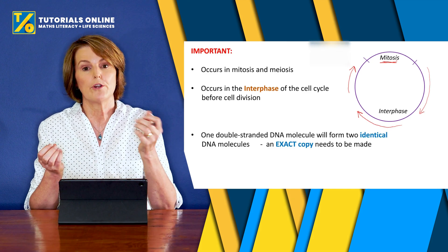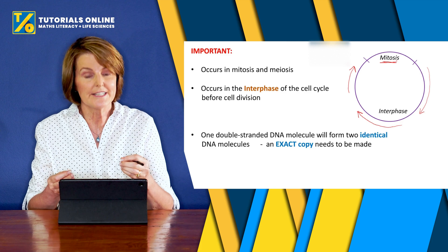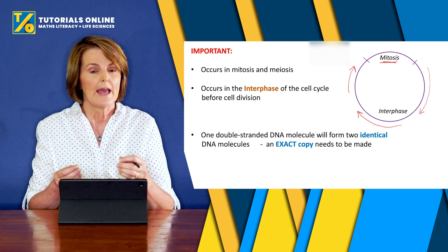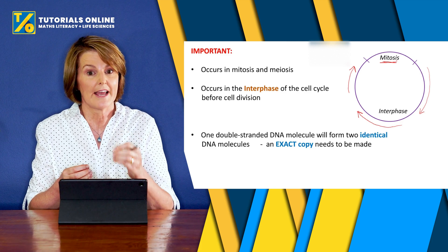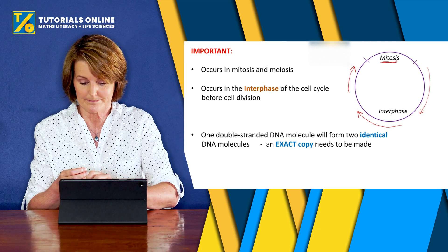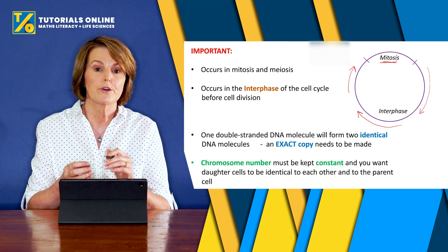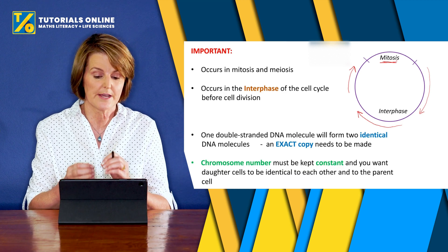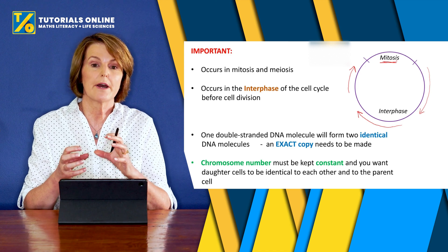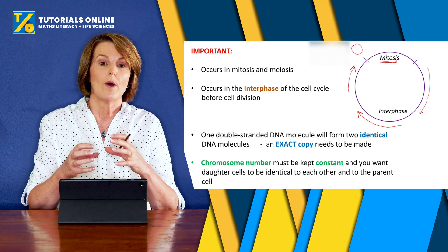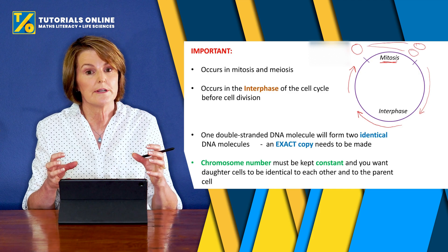One double-stranded DNA molecule will form two identical DNA molecules, so it's very important that an exact copy is made. You also want the chromosome number to stay the same. Remember in mitosis, one parent cell becomes two daughter cells.